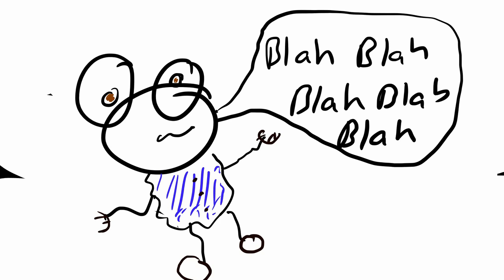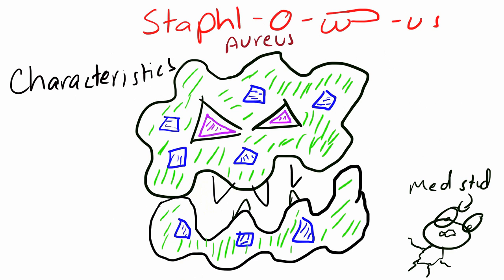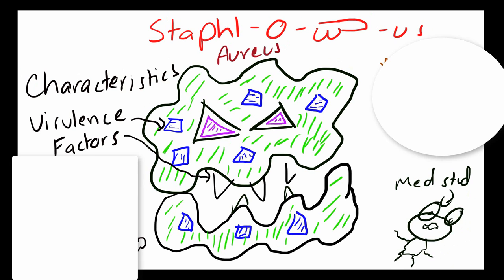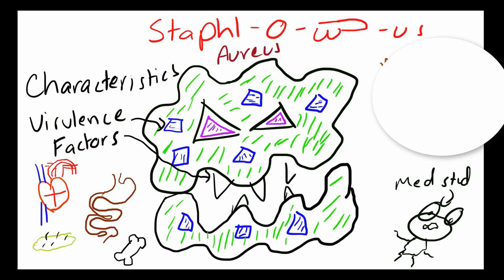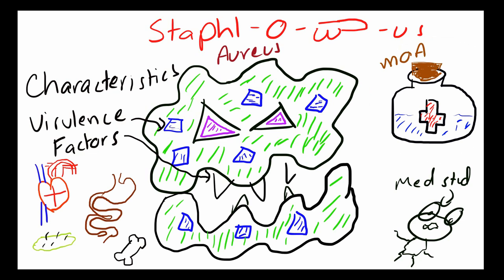We're going to start off by covering some microbiology with Staph aureus because it's pretty simple. We'll cover its characteristics, the virulence factors, the organ systems affected by it, and the treatment options based on the type of infection. And while we're at it, we'll cover some of the mechanisms of action of the antibiotics we can use against it.